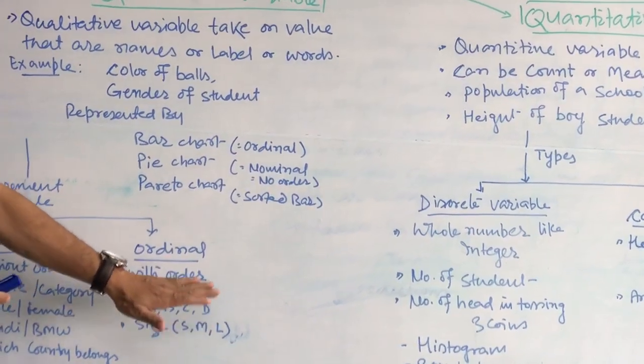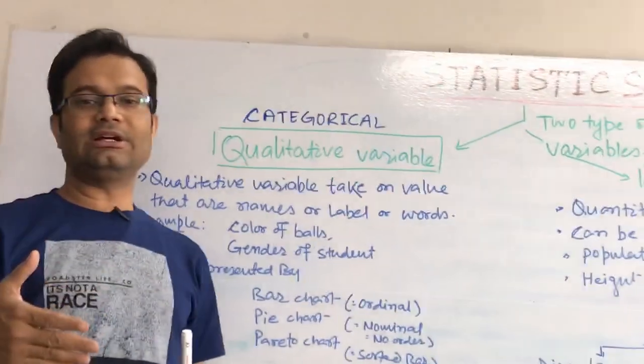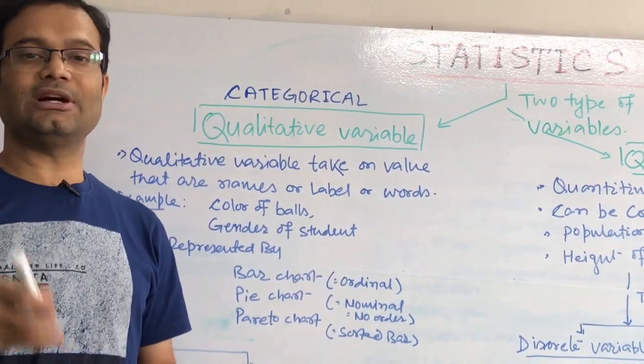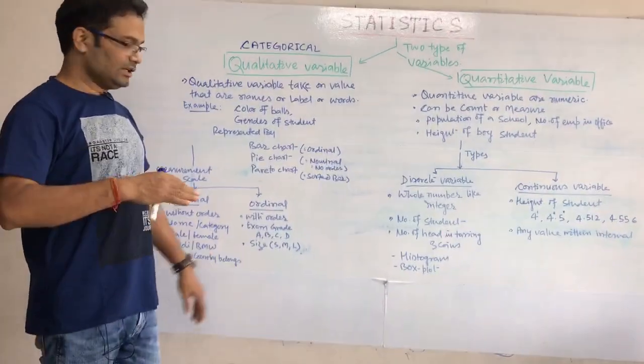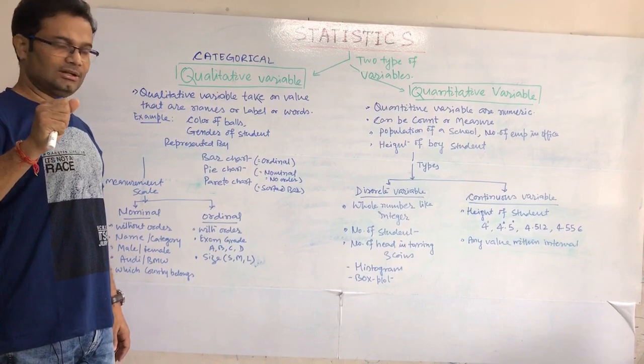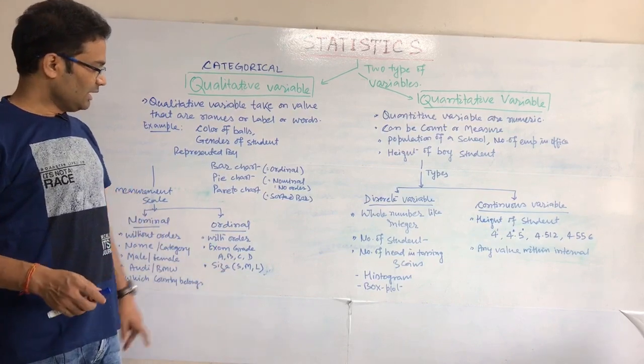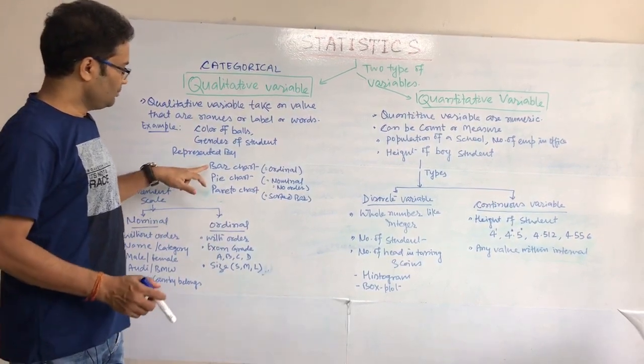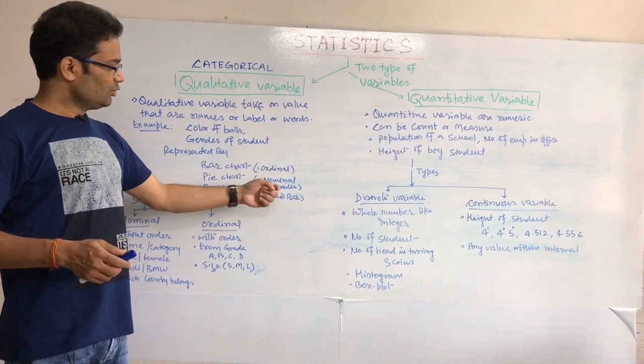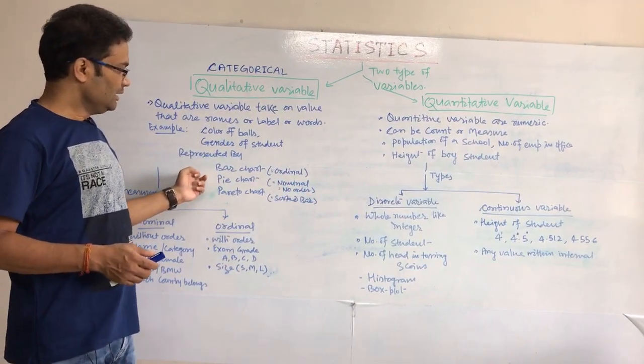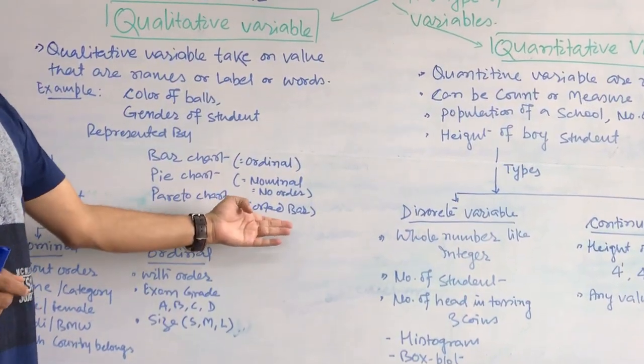But some data we have where order matters, like exam grade. If you want to categorize the students based upon your grading: A grade, B grade, C grade. That matters here. Or based upon the marks, how much marks he obtained in a certain paper, size of the t-shirts or size of the student. This is called ordinal data, but both are qualitative. Bar chart for ordinal data, we generally use bar chart. For nominal data, where the order does not matter, use pie chart. And where we want to sort it, we can say Pareto chart or sorted bar chart.